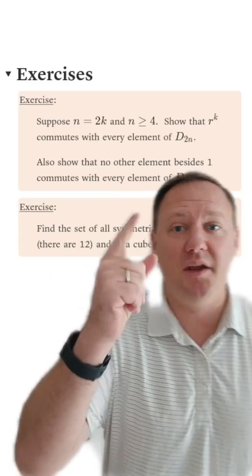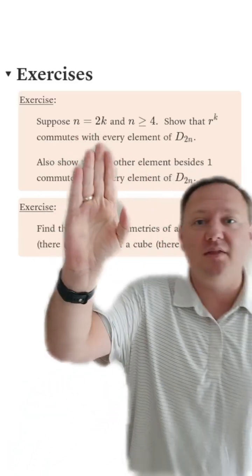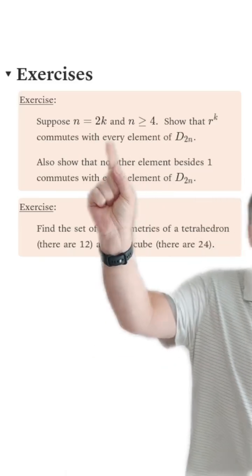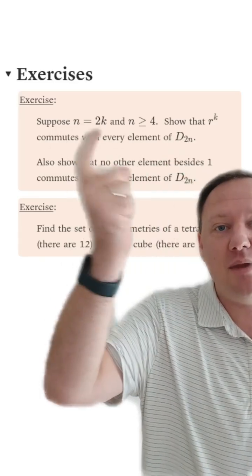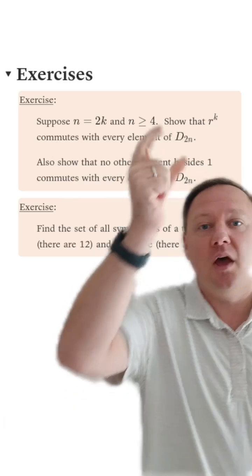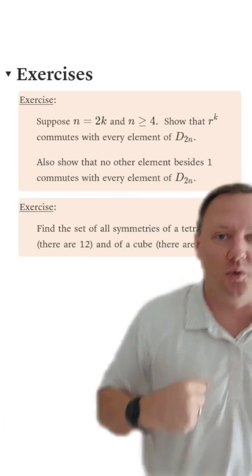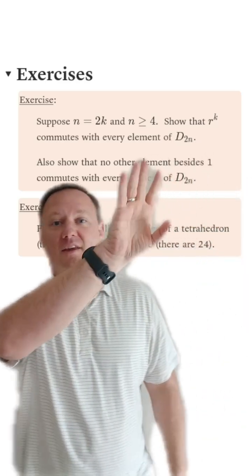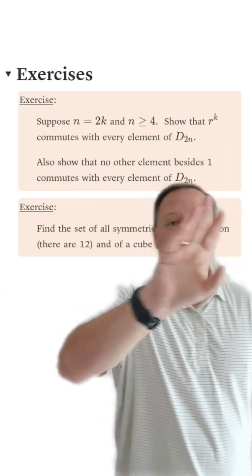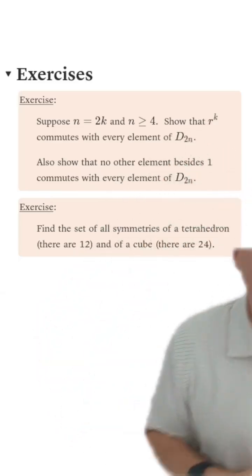Here's a significantly trickier one, which is to suppose that the order of the group is even. Let k be half the size of the group. Show that r to the k commutes with every element of the dihedral group. Moreover, show that the only thing that commutes with every element of this group is r to the k and the identity.